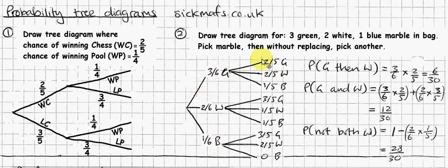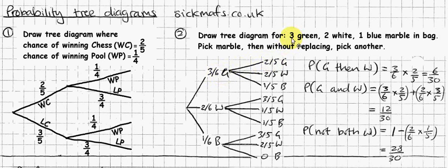Given that I pick a green marble first, probability tree diagrams show all possible things that could happen — green then green, green then white, and so on. There are nine different possible outcomes altogether. If I pick a green in the first pick, I've only got two greens left in the bag, two whites, and one blue — so only five marbles total. That means the probability of getting a green on the second pick, after picking a green, is 2/5, because I've got two greens out of five marbles.